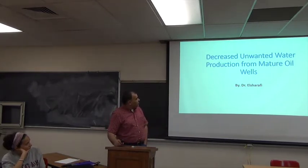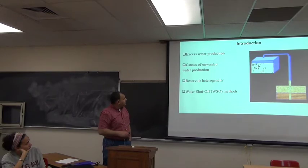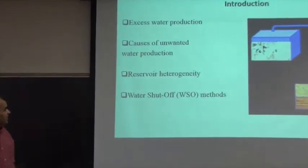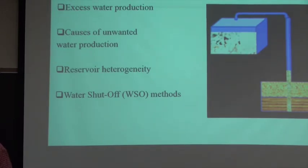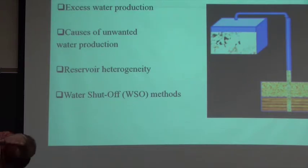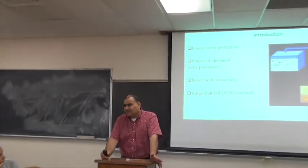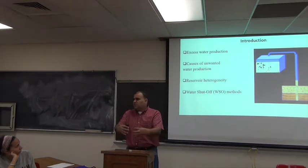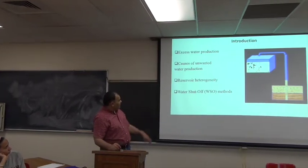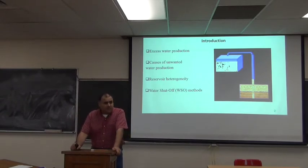Today I'm going to talk about decreasing unwanted water production from mature reservoirs. My presentation will include these titles: excess water production introduction, causes of unwanted water production, reservoir heterogeneity - which means your reservoir is not homogeneous, meaning you have more than one permeability. Permeability is the ability of the fluid to flow through the porous media, which is your reservoir. Then we'll talk about how we can solve this problem using water shutoff methods - mechanical methods and chemical methods.